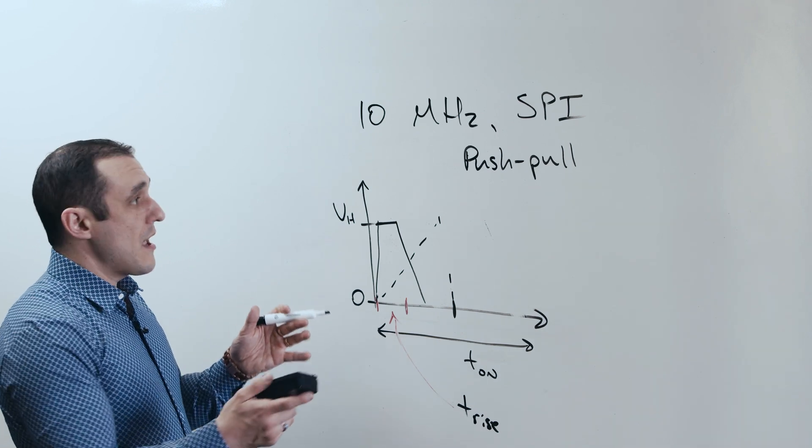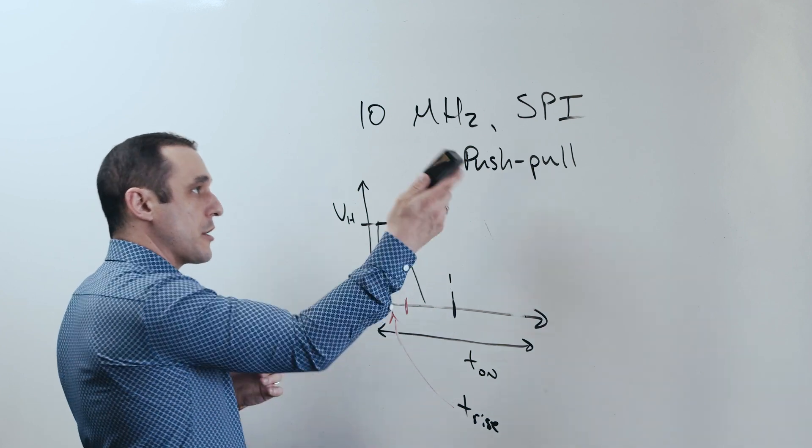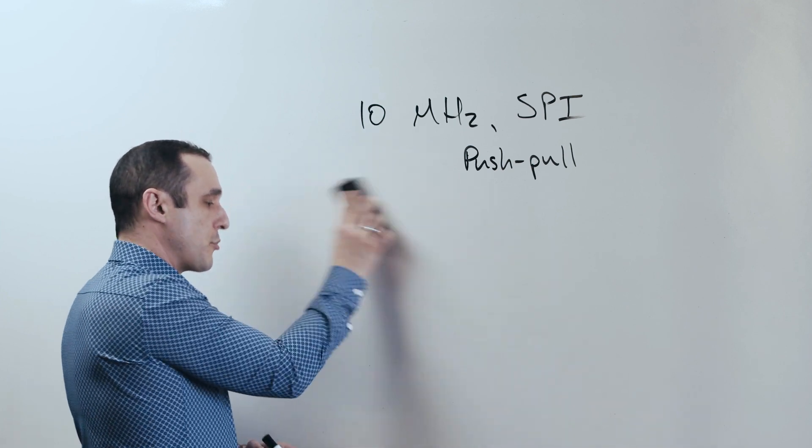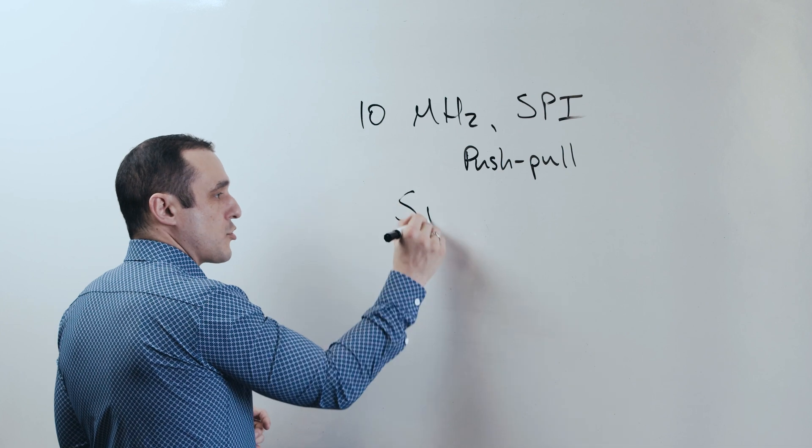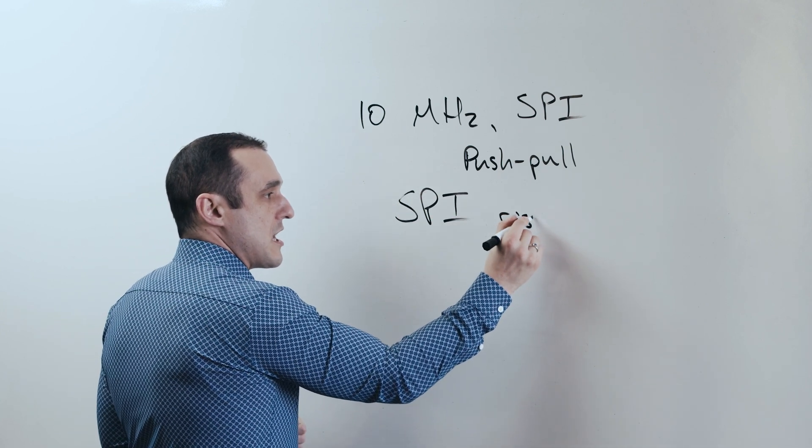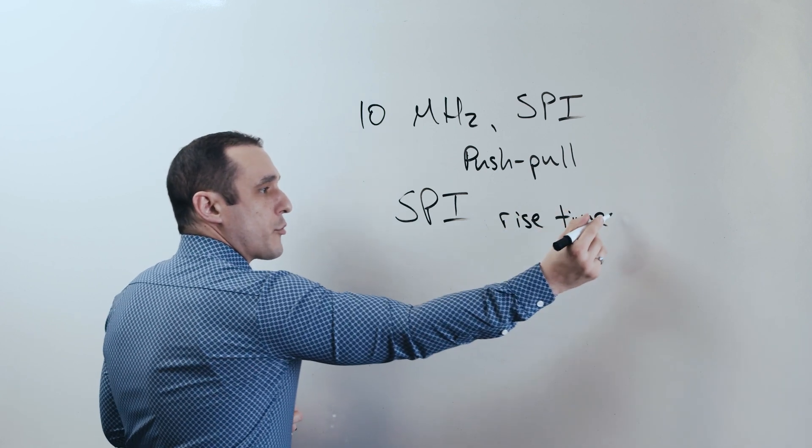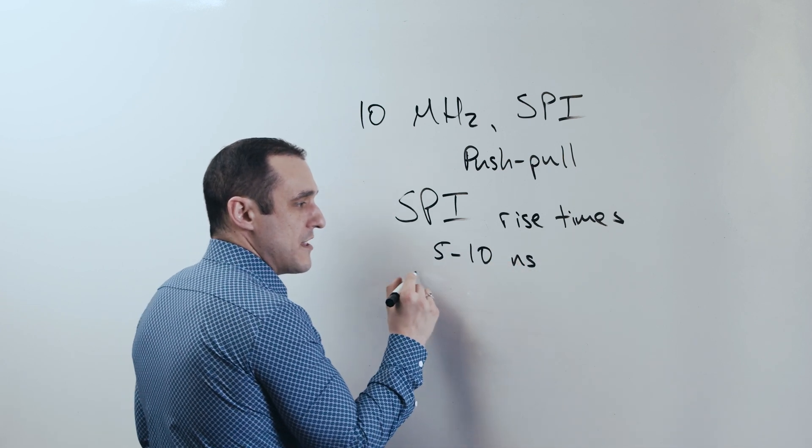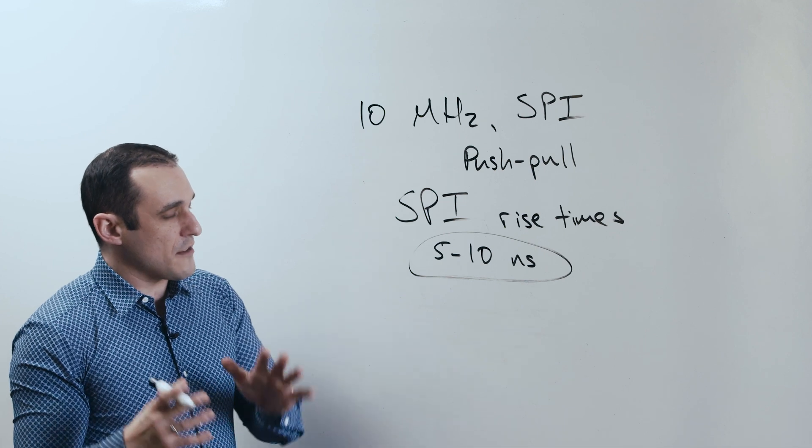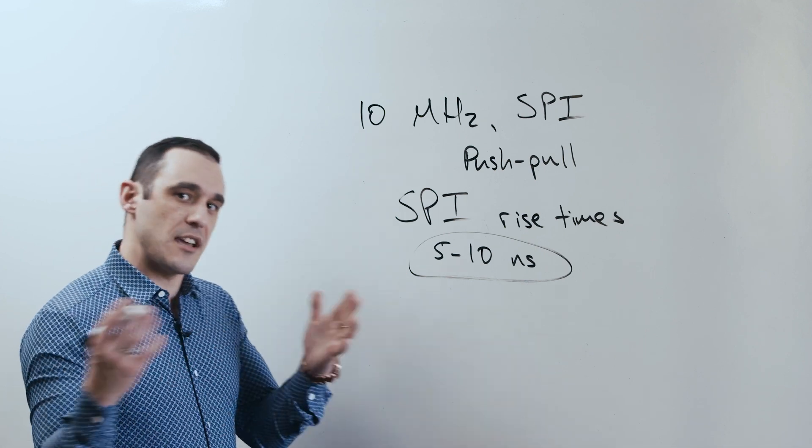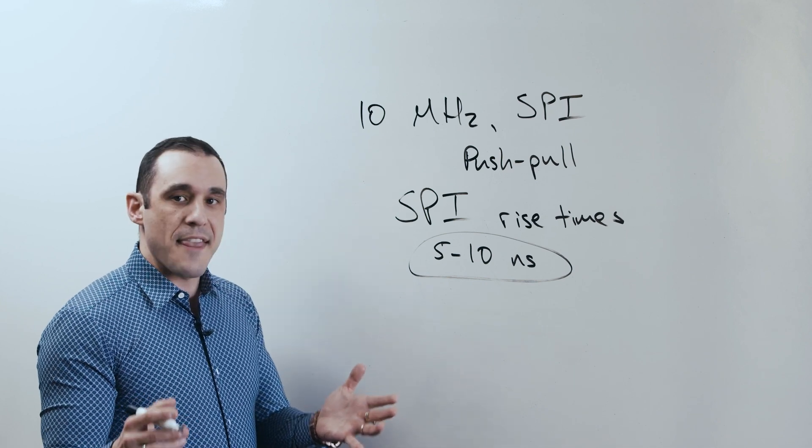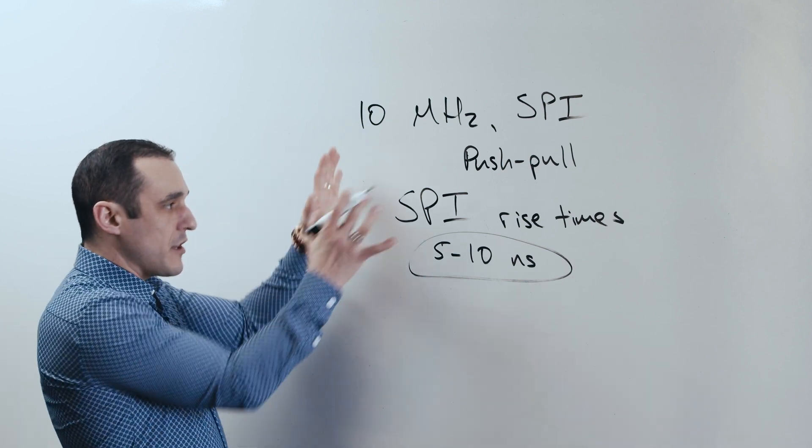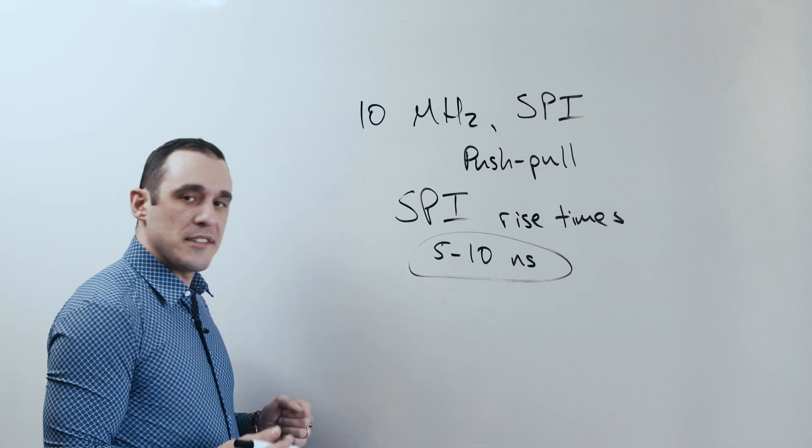So the question now becomes, how fast can these rise times actually be in an interface like SPI? And how does that compare to something like maybe I squared C, where you don't see the same signal integrity problems? Well, for SPI, it really depends on the construction of the buffer that is in your processor or in your ASIC. But the rise times could be as low as, let's say, 5 to 10 nanoseconds. And this value right here is something that I seem to recall reading in one of the STM32 data sheets. STM32 is a pretty popular microcontroller, of course. And they list the rise times that they've measured for their outputs on their GPIOs. And those GPIOs could be configured as a SPI bus. And so that would be the rise time of this particular bus.